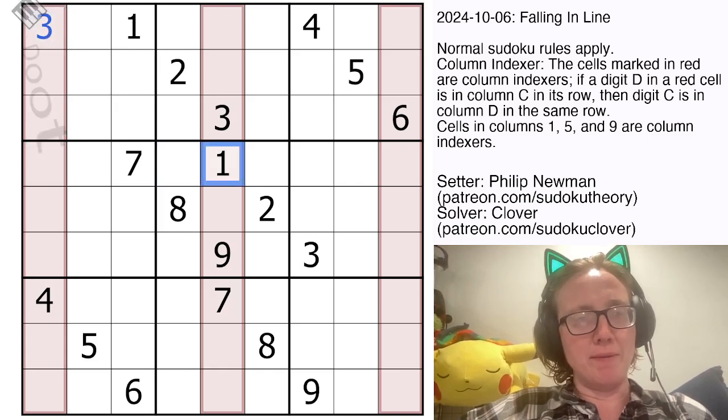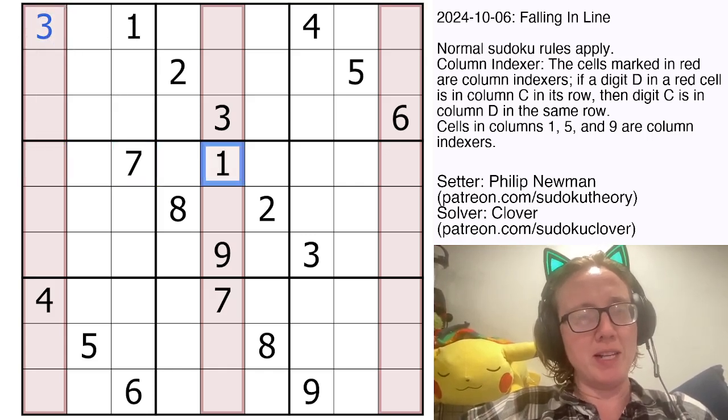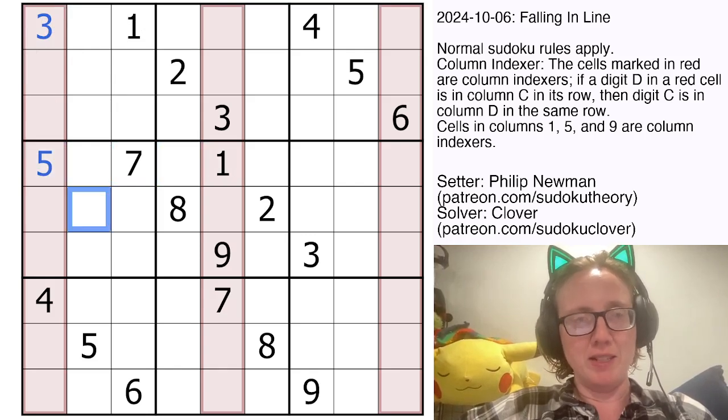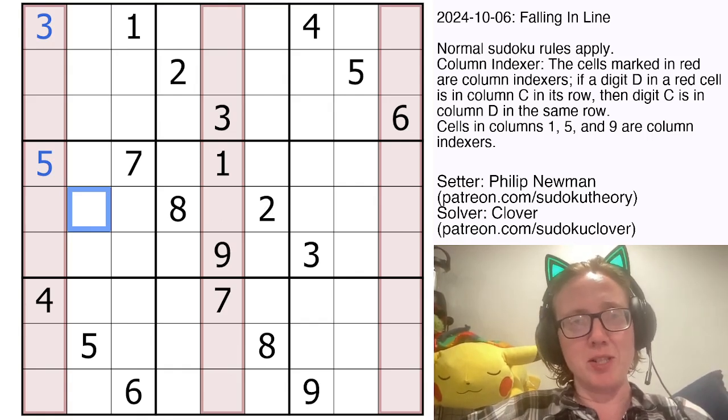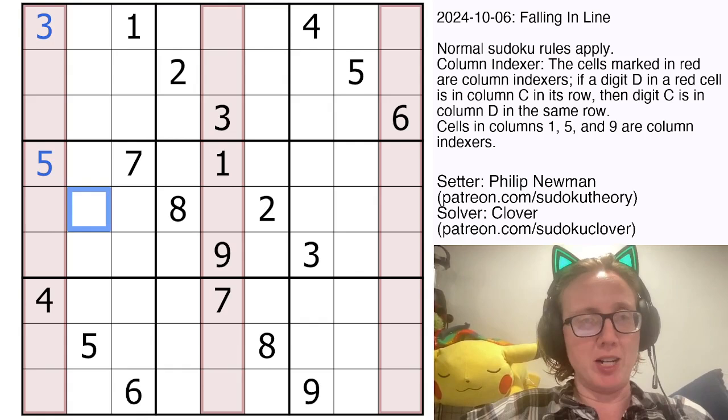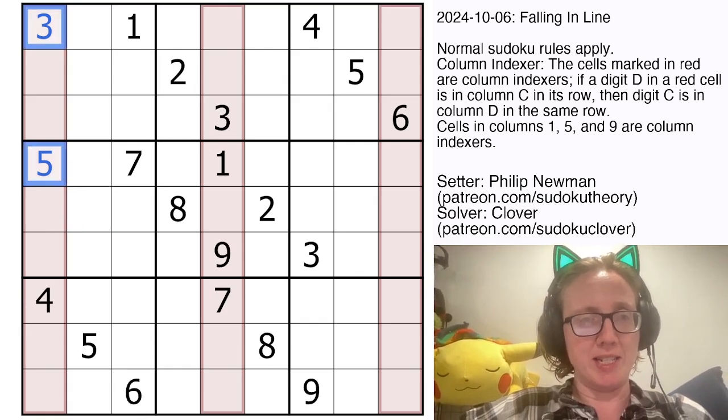There's a one here, it's in the fifth position from the left, one two three four five, so the first column will contain a five. And the same will be true for all of the other ones in the puzzle, but they are not placed yet, so we need to figure out where they are before we get to place our indexing digits.